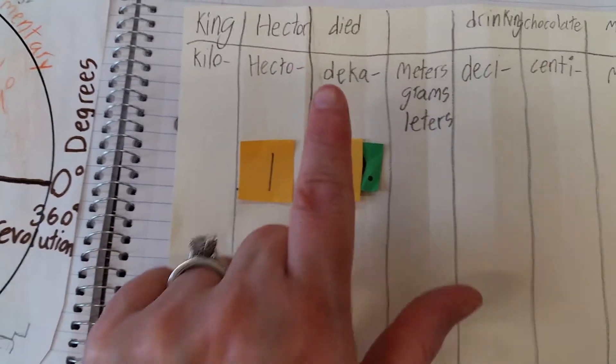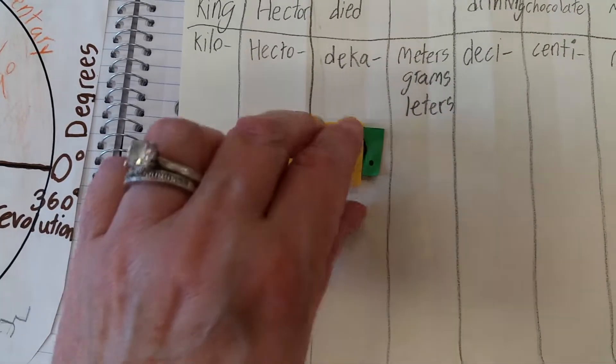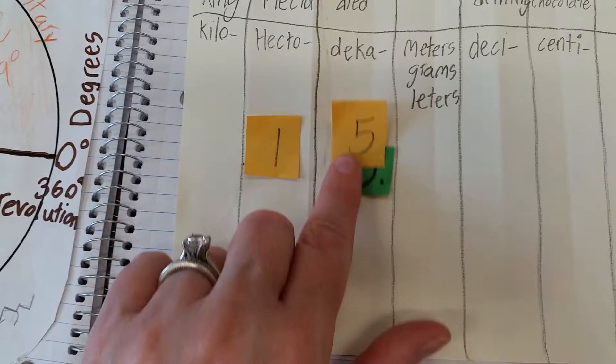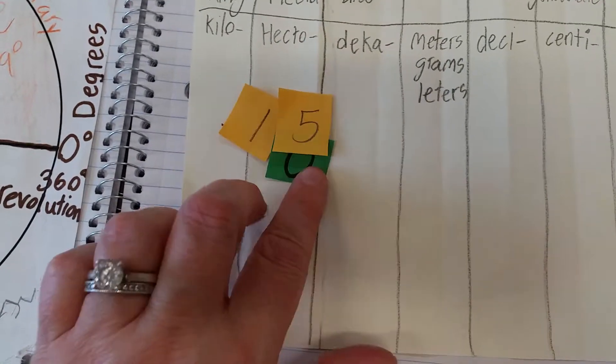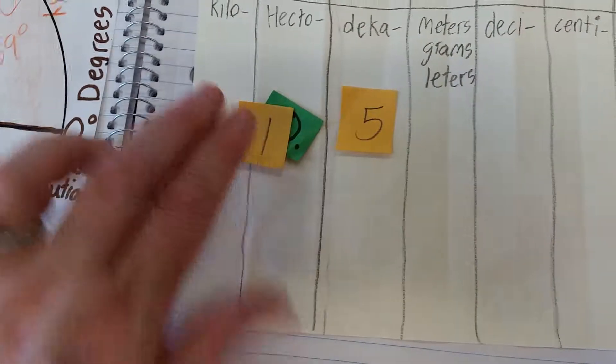So how many, 15 decameters is going to be how many hectometers? So again, the froggy is little and tiny, and he can only hop one space at a time. I'm sorry, this is not looking that neat and tidy, but I only have one hand.